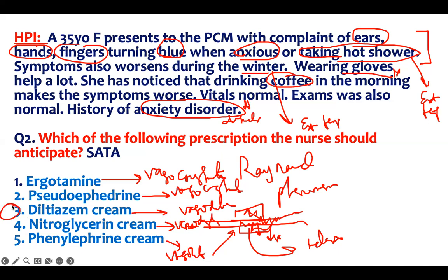The right answer is diltiazem cream. Nitro is more effective on veins, not the artery — and here we want blood supply to go to the extremities, so we need something that affects the artery. There's only one answer choice here; if you pick more than one, you get zero. This is what you should be doing with pharmacology: diagnosis by finding cues and buzzwords, answering side effects, going back to find the medication causing that side effect. Subscribe for more pharmacology content. Take care and have a good day.